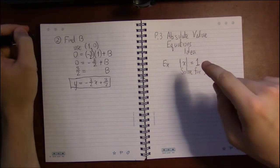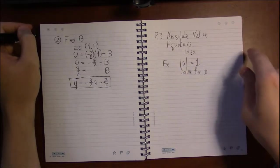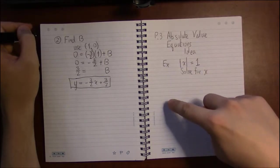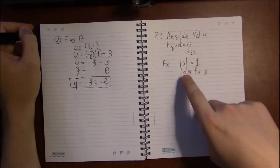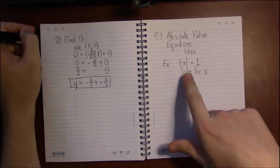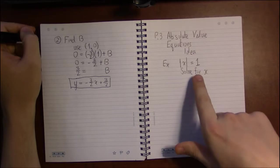Absolute value of 2 is 2. Absolute value of negative 2 is 2. So just guessing, what solutions can you come up with?